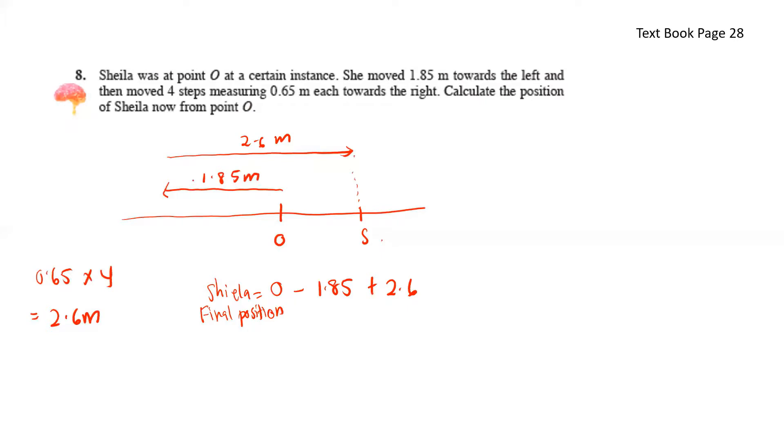From 0, she moves to the left. So that's negative. And then moving to the right gives us positive. So altogether we have 0.75 meters.